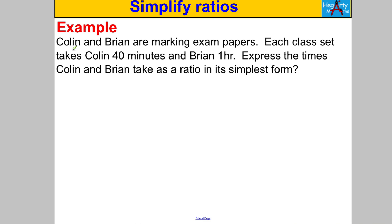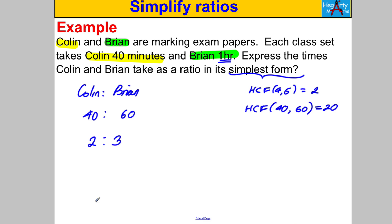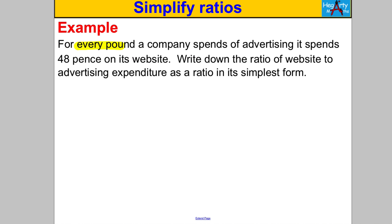Next question: Colin and Brian are marking exam papers. Colin takes 40 minutes and Brian takes 1 hour — express the times as a ratio in simplest form. Be super careful: they're in different units, so convert 1 hour to 60 minutes. That gives 40 to 60. The HCF of 40 and 60 is 20 — dividing both sides by 20 gives 2 to 3 as your answer in simplest form.